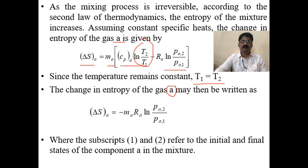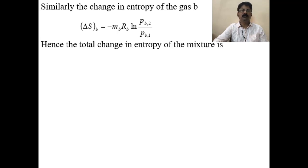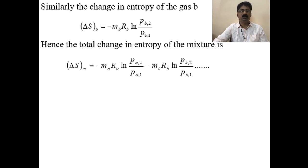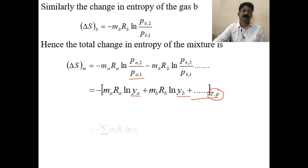Similarly, the change in entropy of gas B is: ΔsB = −mB · rB · ln(pB2/pB1). The total change in entropy of the mixture considering two component gases is: Δsm = −mA · rA · ln(pA2/pA1) − mB · rB · ln(pB2/pB1). This ratio can also be written using mole fractions yA and yB, giving: −[mA · rA · ln(yA) + mB · rB · ln(yB)], all taking place at constant temperature and pressure.